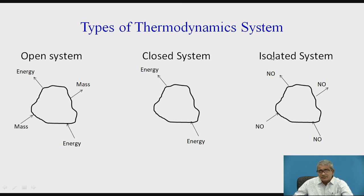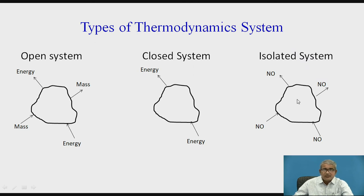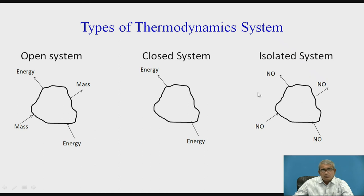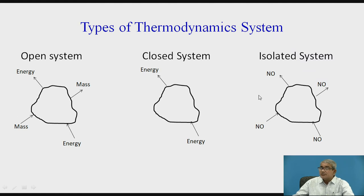The third type is the isolated system. Isolated system means well insulated — for example, AC rooms in your house. In AC rooms, no mass is entering and no mass is leaving that system, and energy is not transmitted. Both mass and energy are not transmitted from system to surrounding or surrounding to system.